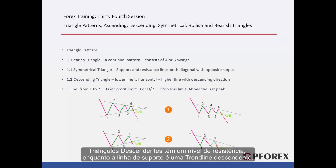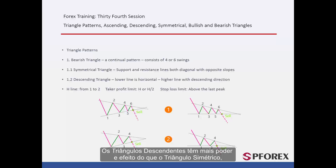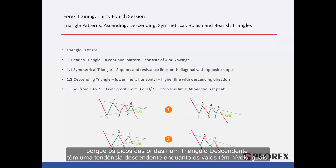A descending triangle has a resistance level, while the support line is a downward trend line. A descending triangle has more power and effect than a symmetrical triangle because peaks of waves in a descending triangle have a descending trend, while valleys have equal levels.